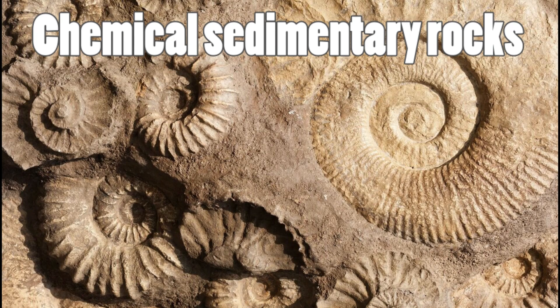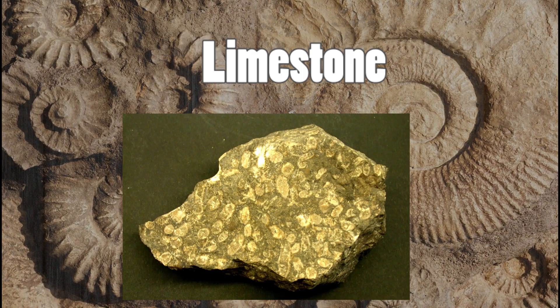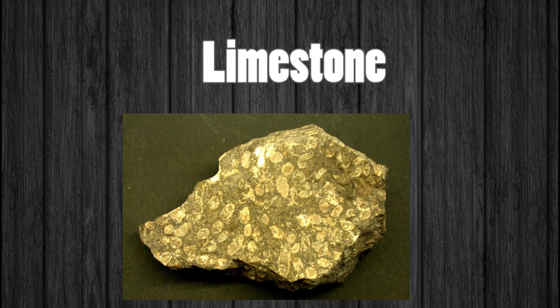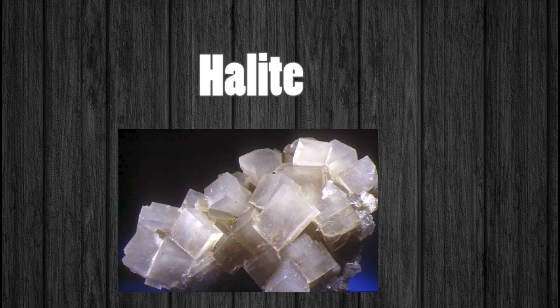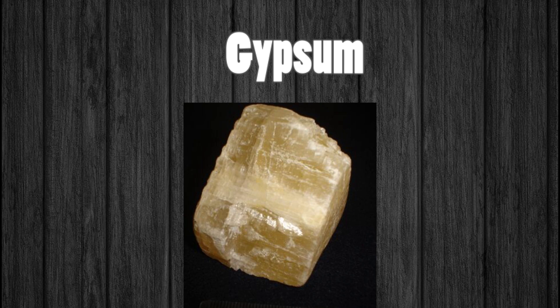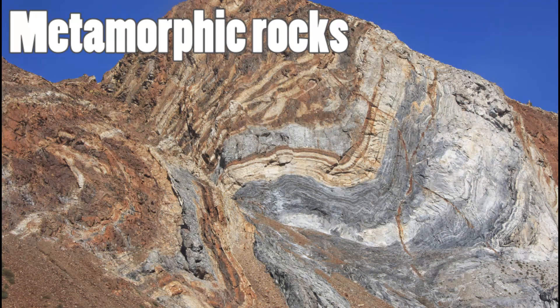The other type of sedimentary rocks are chemical sedimentary rocks, which originate from the precipitation of dissolved minerals transported and concentrated in a basin. The main chemical sedimentary rocks are limestone — a rock formed mainly by precipitated fine grains of calcium carbonate or calcite, generally containing fossils of aquatic organisms — as well as rock salt or halite and gypsum.